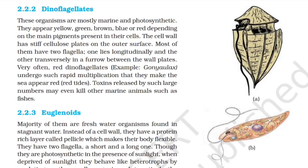2.2.2 Dinoflagellates. These organisms are mostly marine and photosynthetic. They appear yellow, green, brown, blue, or red depending on the main pigments present in their cells. The cell wall has stiff cellulose plates on the outer surface. Most of them have two flagella — one lies longitudinally and the other transversely in a furrow between the wall plates. Very often, red dinoflagellates such as Gonyaulax undergo such rapid multiplication that they make the sea appear red (red tides). Toxins released by such large numbers may even kill other marine animals such as fishes.